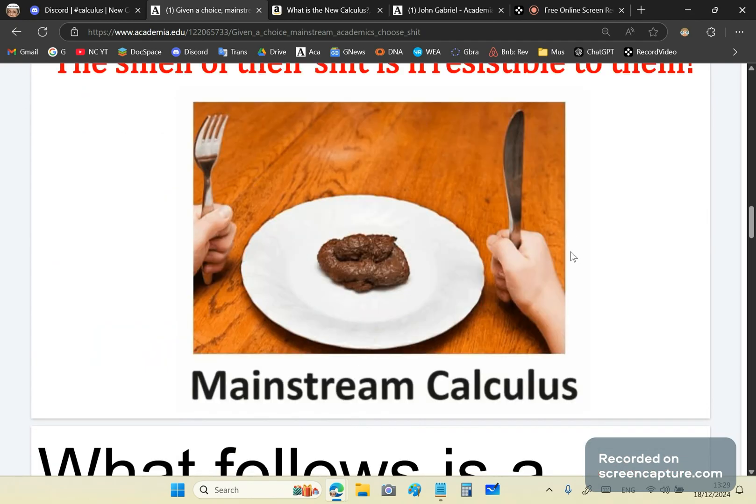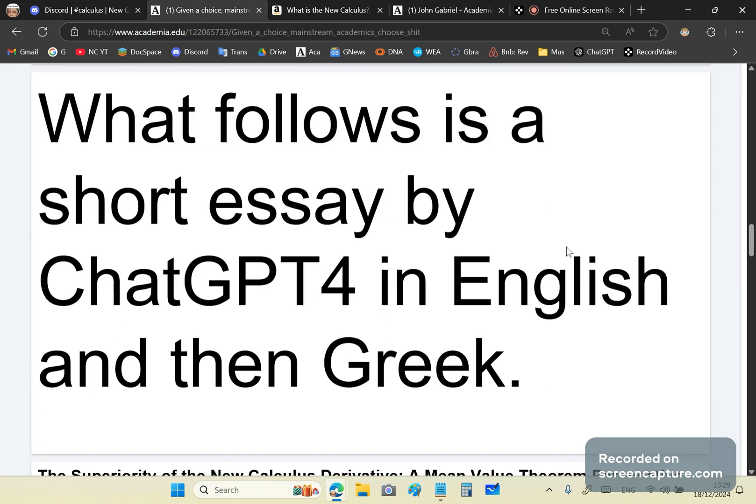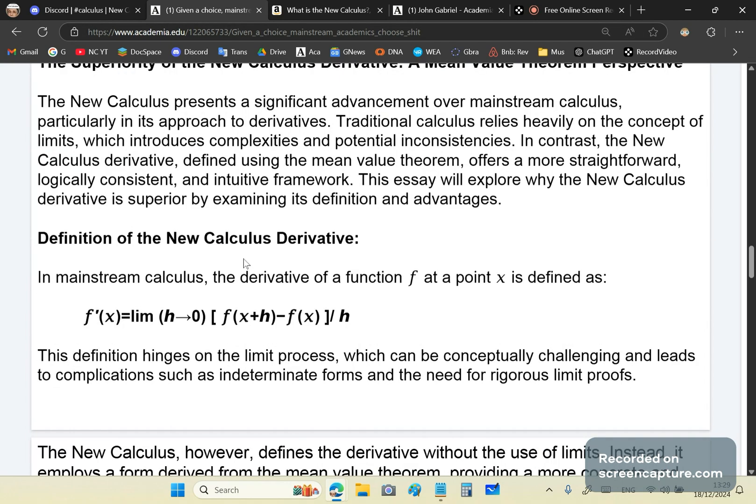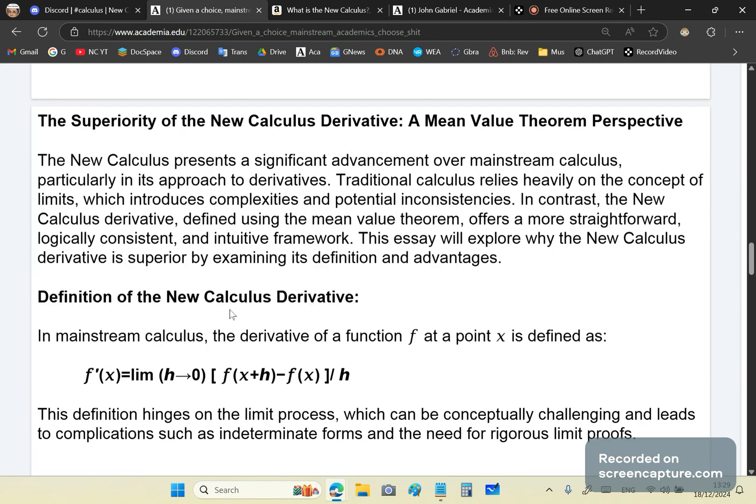What I'd like to tell you is that you can also read this article. The superiority of the new calculus derivative is very clear. There is no doubt that it's correct. There is no doubt that it's 100% rigorous and based on geometry. And it presents a significant advancement over mainstream calculus, particularly in its approach to derivatives. Traditional calculus relies heavily on the concept of limits, which introduces complexities and potential inconsistencies. In contrast, the new calculus derivative defined using the mean value theorem offers a more straightforward, logical, consistent and intuitive framework that leads seamlessly into the integral definition.